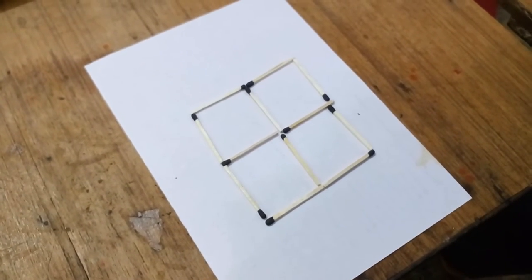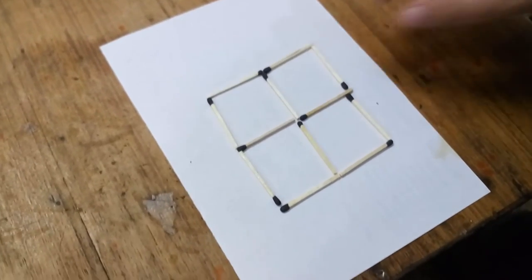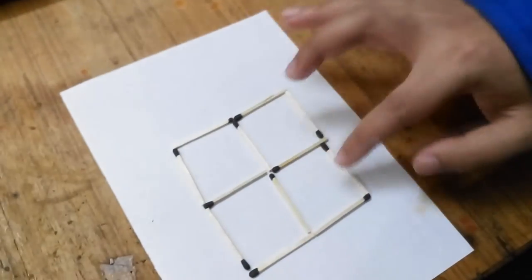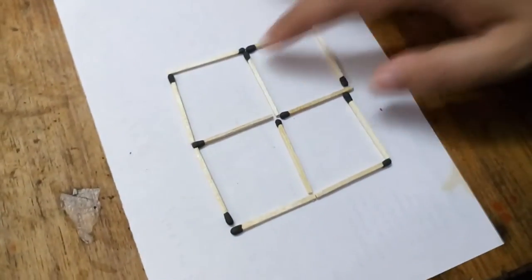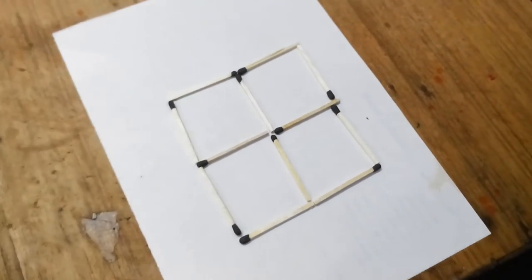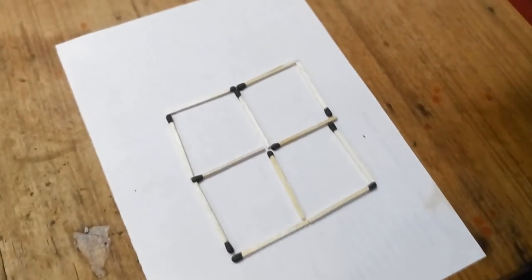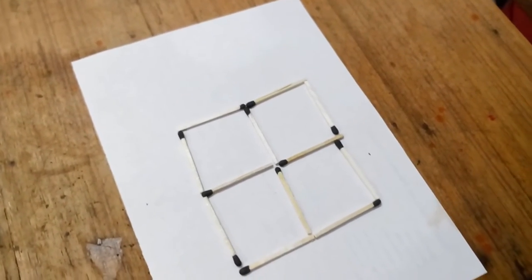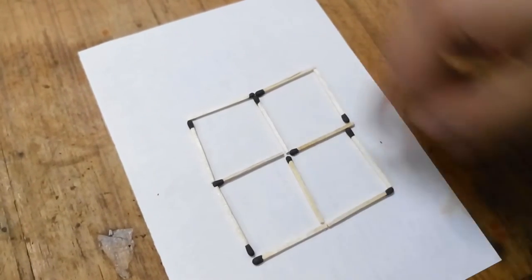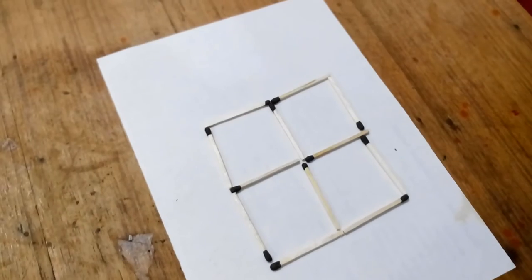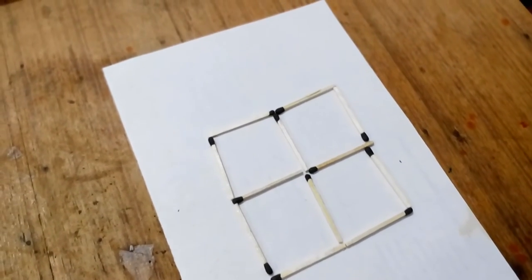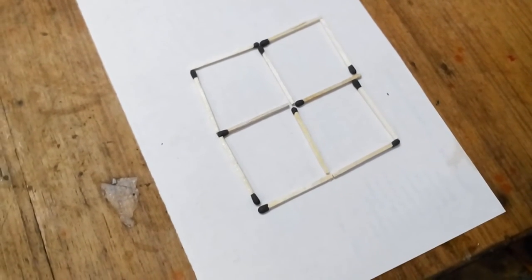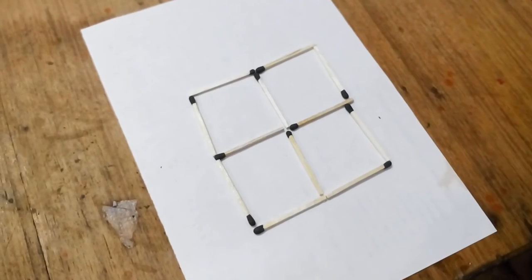For the seventh and awesome magic bet with matches, you need 12 matches. Arrange your matches like four squares, as you can see: one, two, three, four. Now the important part is that you challenge your friends to move just two matches - they can only move two matches to make these four squares into seven squares.